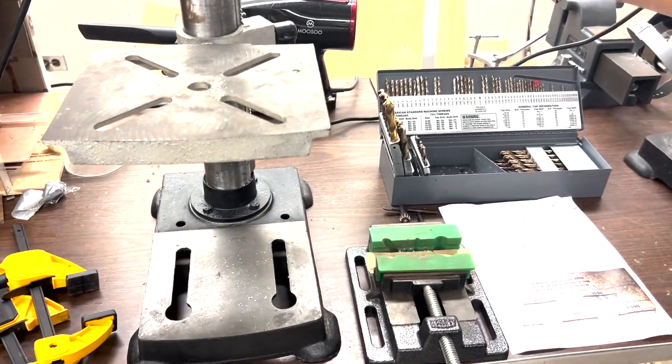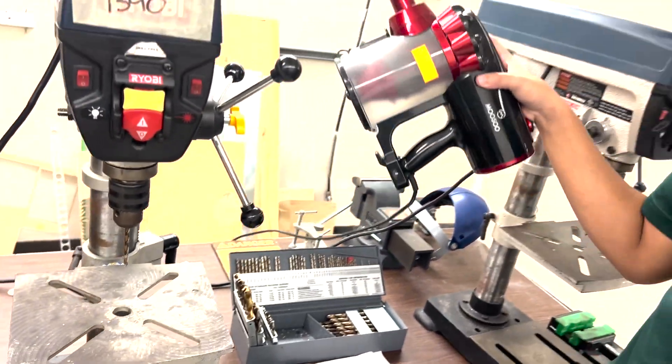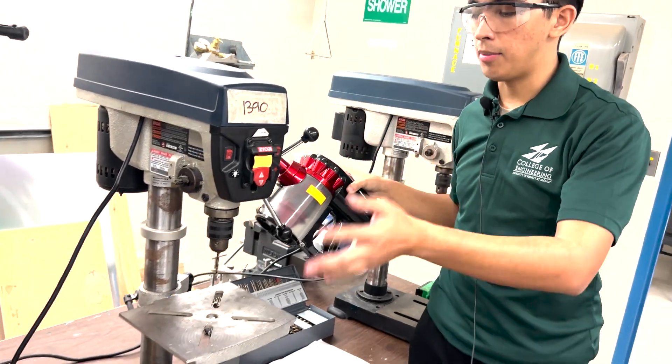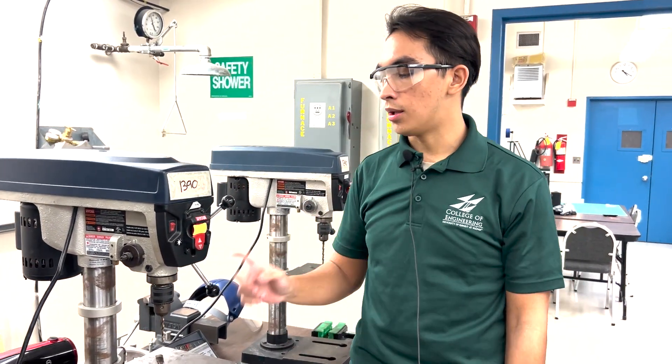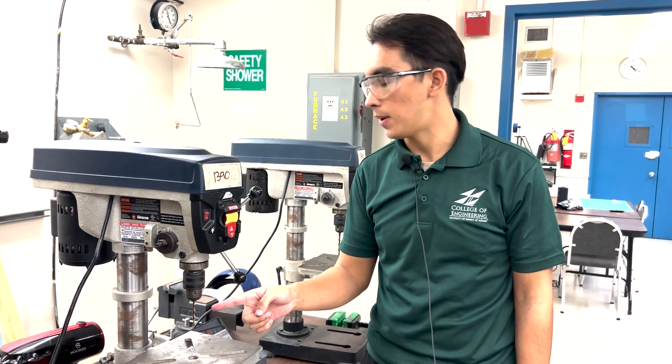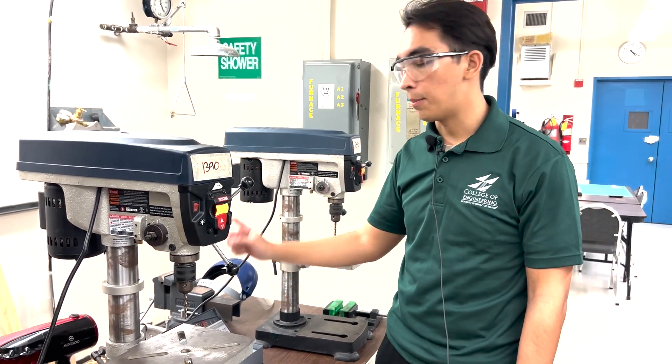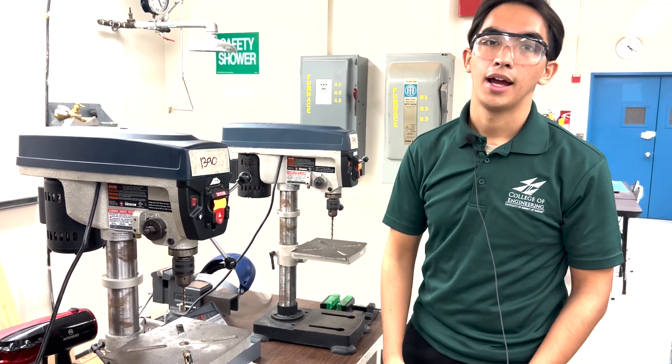From there, you want to use the vacuum over here, vacuum your area, clean up everything, make it super nice and clean. When the bit cools down, you want to take this bit off using the chuck key and put it back into the set. And that's how you operate the bench drill press.